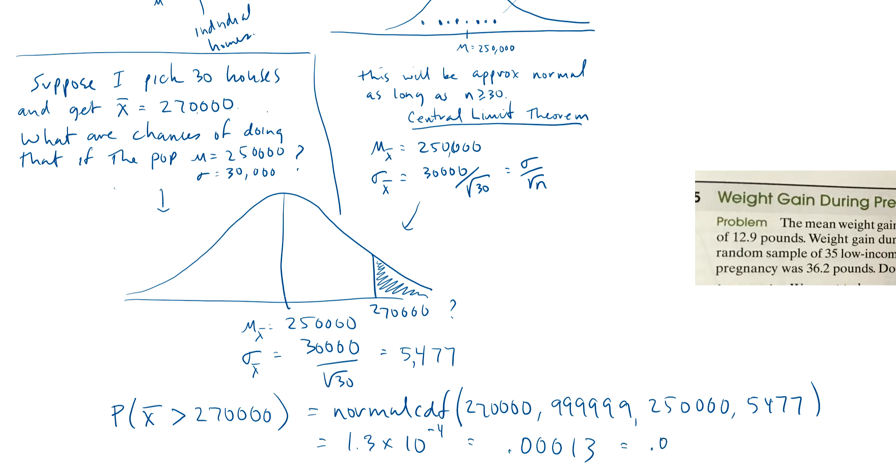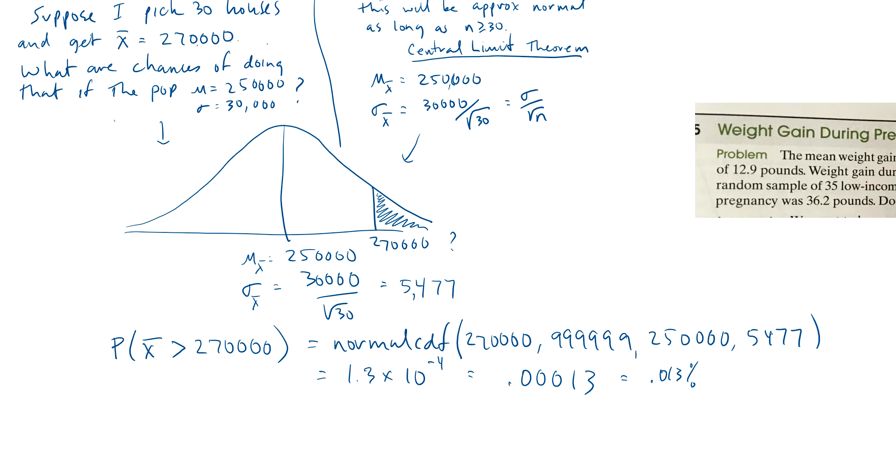If I found the z score, I could have just said, oh, the z score is 270,000 minus 250,000 divided by 5477. And if I did that, I would get, is that 20,000? That's a lot of standard deviations away, isn't it? That's pretty extreme.